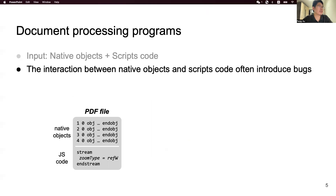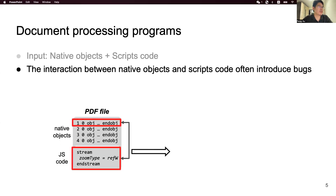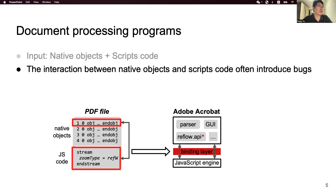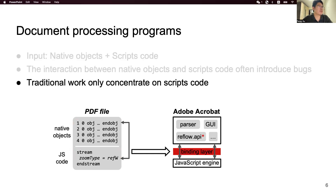The interaction between native objects and the script code often introduces bugs. For efficiency, applications are usually developed in low-level languages such as C and C++, creating a gap between the high-level scripting language and low-level application. The script engine and the application are usually developed independently. Vulnerabilities are usually caused by inconsistency between native objects and the script code. Previous works haven't been able to effectively find such bugs, mainly because they only mutated the script code without any mutation in native objects.